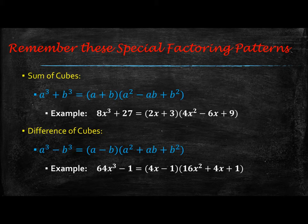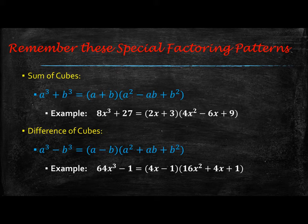In this unit we're going to talk about higher degree polynomials. That means anything greater than a degree of 3. A degree of 3 would be like x to the 3rd, degree of 4 would be x to the 4th, and so on. I want you to remember these special factoring patterns that we talked about when we did our factoring unit.